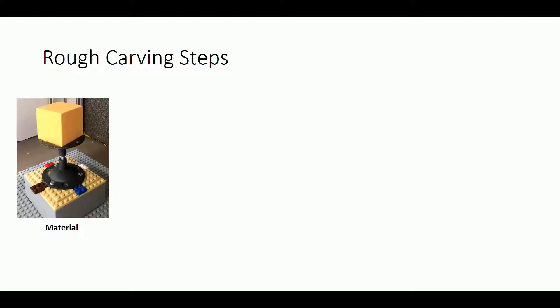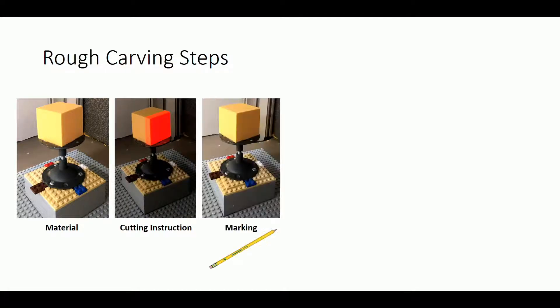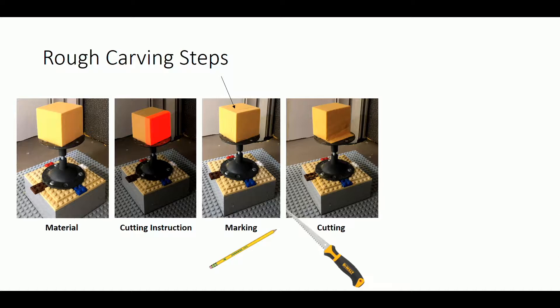For the steps of our method, the user will start with material fixed on a stage that could be rotated in 90 degrees, so we have only four orientations. We start projecting the cutting instructions and allow the user to use, for example, a pencil to mark where they need to cut before actually performing the cut using a saw.